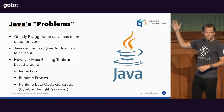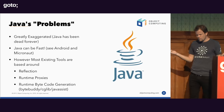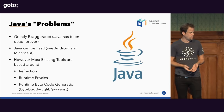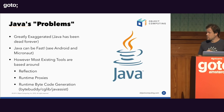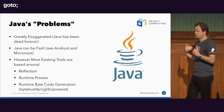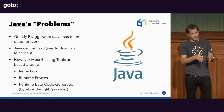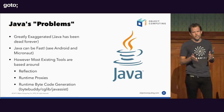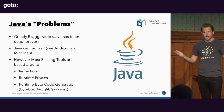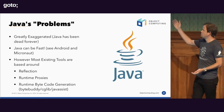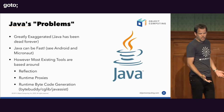Java can be fast. However, many existing tools for Java are based around reflection, runtime proxies, and runtime bytecode generation. Generating bytecode at runtime is horrible for memory consumption because you have to generate classes at runtime, whether it's ByteBuddy, cglib, or Javassist. If you want to keep memory low, don't generate bytecode at runtime.